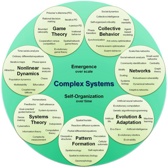Complex systems may have a memory: the history of a complex system may be important. Because complex systems are dynamical systems they change over time, and prior states may have an influence on present states. More formally, complex systems often exhibit spontaneous failures and recovery as well as hysteresis. Interacting systems may have complex hysteresis of many transitions. Complex systems may also be nested: the components of a complex system may themselves be complex systems. For example, an economy is made up of organizations, which are made up of people, which are made up of cells, all of which are complex systems.